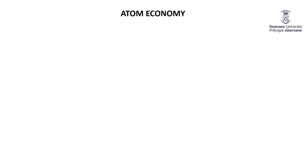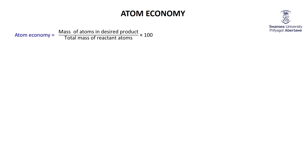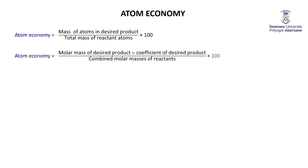A final idea in stoichiometry is atom economy, especially important in green chemistry and sustainable resource use. Atom economy reflects how efficient — how 'green' — a reaction is. It's defined as the mass of atoms in the desired product divided by the total mass of all reactant atoms, times 100. Equivalently, it's the molar mass of the desired product times its coefficient, divided by the combined molar masses of all reactants, times 100.